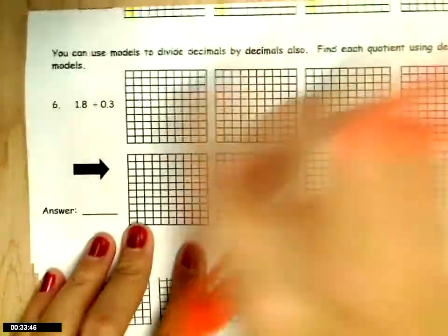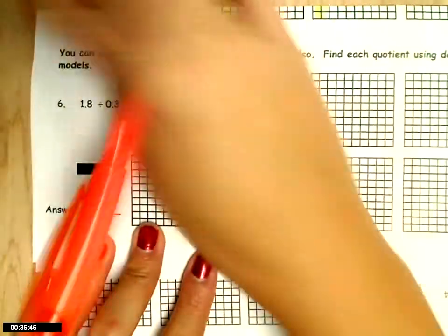Okay, so we're going to start off by shading in 1 whole and 8 tenths.